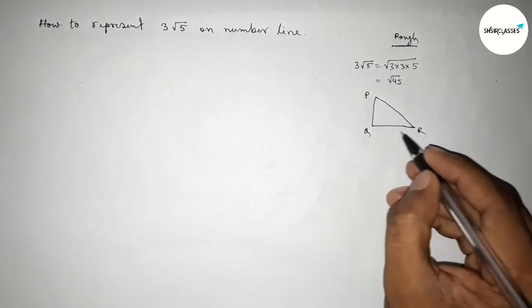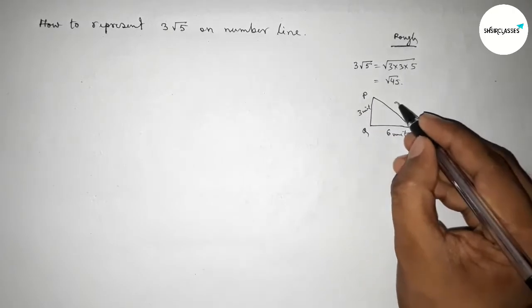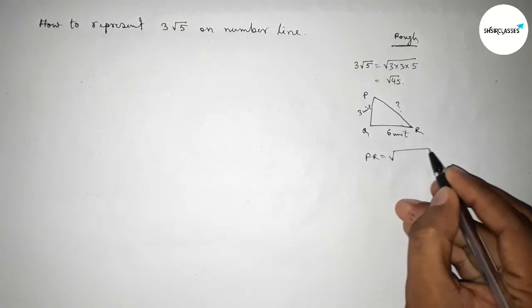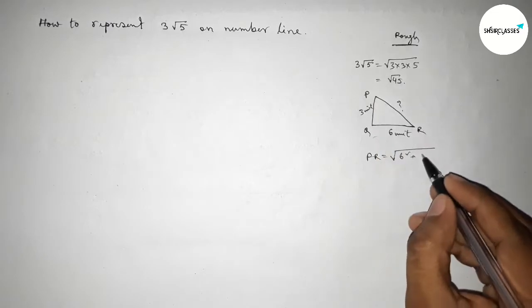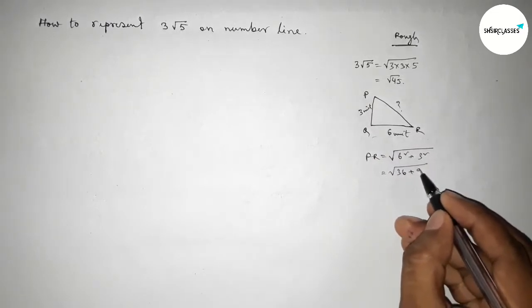PQR with base equal to 6 centimeter, height equal to 3 centimeter. Then hypotenuse equal to, by Pythagoras theorem, root over base square plus height square. So 6 square plus 3 square, so this is 36 plus 9, this is 45 unit.